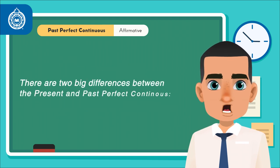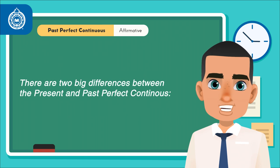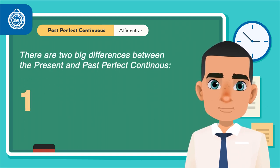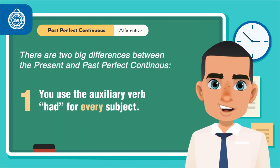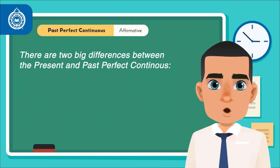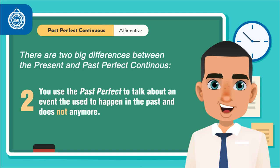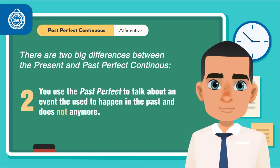So, there are two big differences between the present and past perfect continuous. Number one, you use the auxiliary verb had for every subject. Number two, you use the past perfect to talk about an event that used to happen in the past and does not anymore.